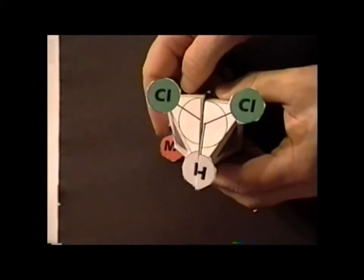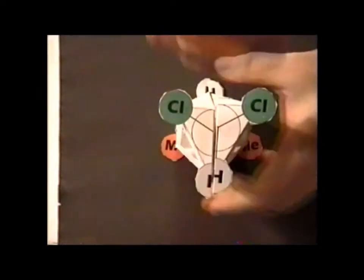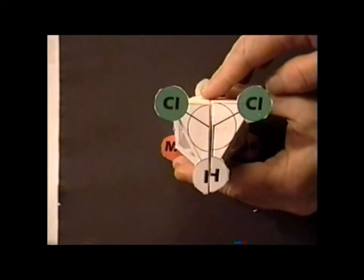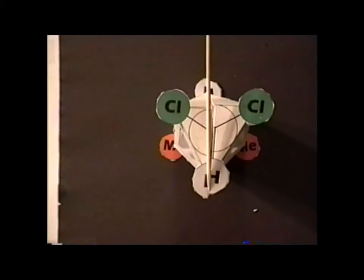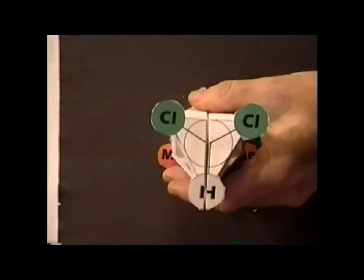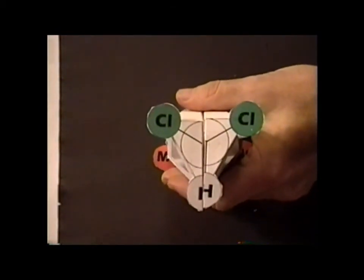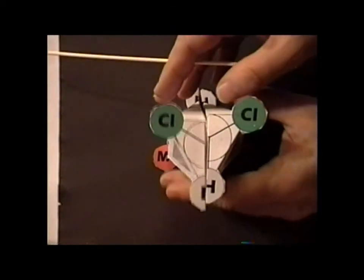So we actually do have a mirror plane that cuts straight down through the molecule. So it reflects chlorine into chlorine, methyl group into methyl, hydrogen goes right to itself, hydrogen just goes to itself. So here we've seen that we've lowered the symmetry all the way down to Cs.